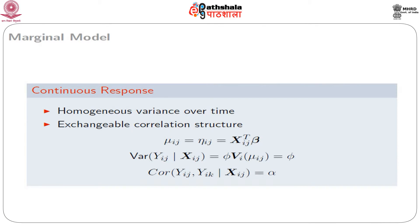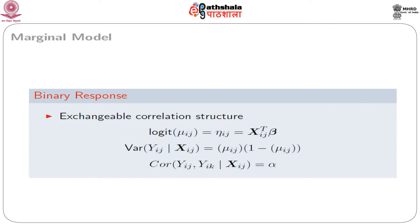For specific cases: for a continuous response with homogeneous variance over time and exchangeable correlation structure, μ_ij = η_ij = x_ijᵀβ (identity link), Var(y_ij | x_ij) = φ, and Corr(y_ij, y_ik | x_ij) = α = ρ. For binary responses, the link is logit: log(μ_ij/(1−μ_ij)) = η_ij = x_ijᵀβ, and Var(y_ij | x_ij) = μ_ij(1 − μ_ij), with exchangeable correlation Corr(y_ij, y_ik | x_ij) = α.